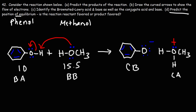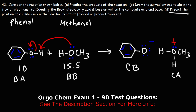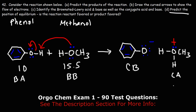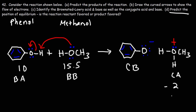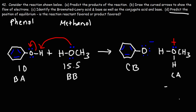Part d: predict the position of equilibrium — is the reaction reactant favored or product favored? To figure this out we need to compare the pKa values of the Brønsted-Lowry acid and the conjugate acid. The pKa of protonated methanol is around negative two. The stronger acid has the lower pKa; the weaker acid has the higher pKa.